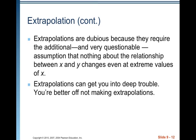Extrapolations are devious because they require the additional and very questionable assumption that nothing about the relationship between x and y changes, even at extreme values of x. Extrapolations can get you into deep trouble, and you're better off not making them. But people do this all the time — one extrapolation people make is looking at when they think Social Security is going to collapse. The latest information is that it should collapse by the year 2035, which happens to be the year I turn 65.